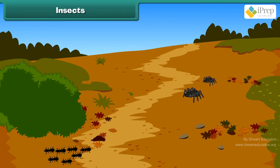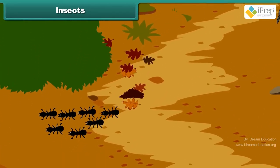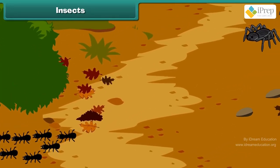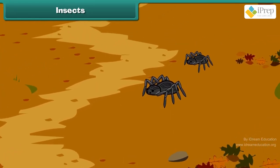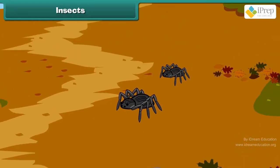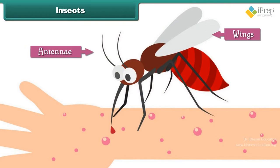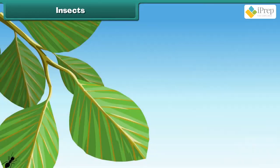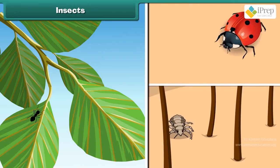Insects are small animals with six legs and a hard outer shell called an exoskeleton. Most have wings and antennae. Some insects creep while others crawl on the ground.